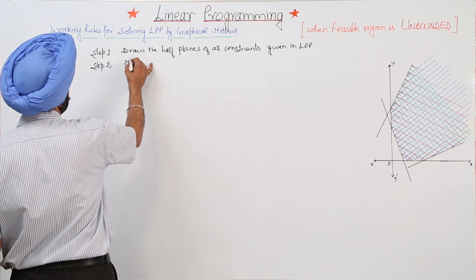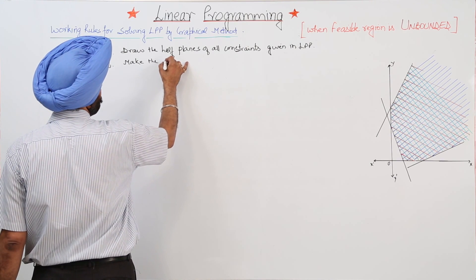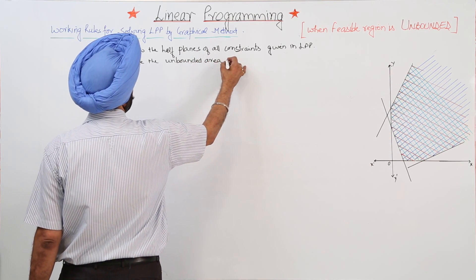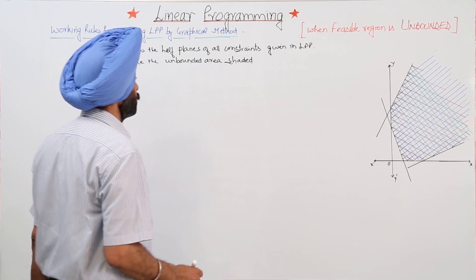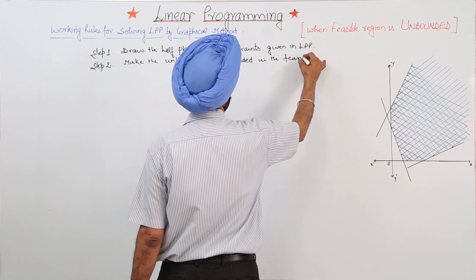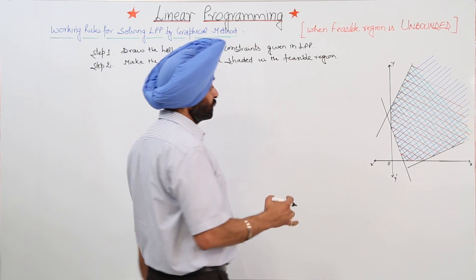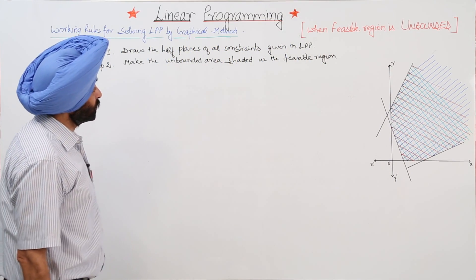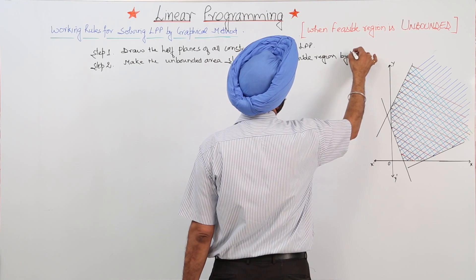Step 2: Make the unbounded area shaded in the feasible region. Make the unbounded feasible area shaded by the lines on the graph.